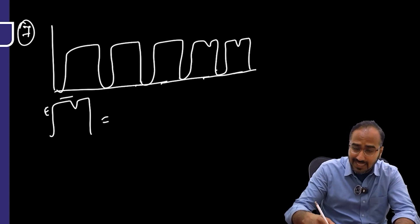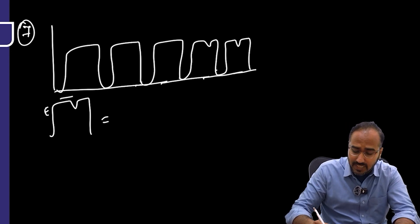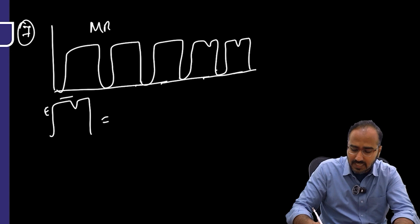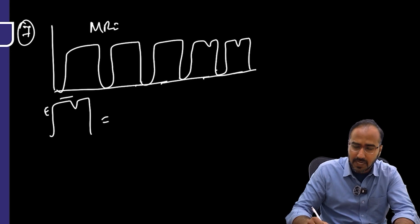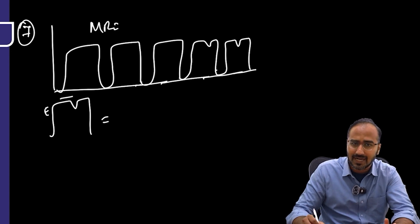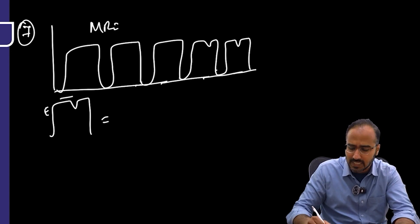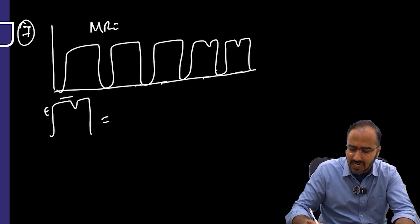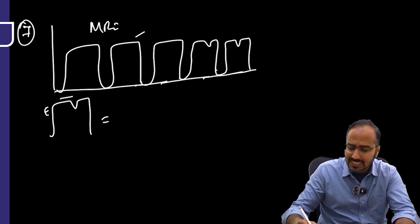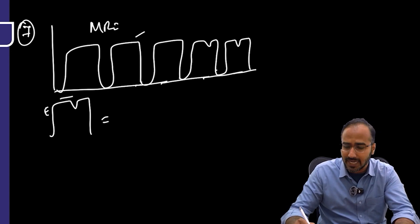At the start of the case we gave the muscle relaxant, so the patient's muscles were relaxed and there was no effort from the patient — you were getting a normal capnograph. But as the case progressed, the patient slowly developed return of spontaneous breathing.